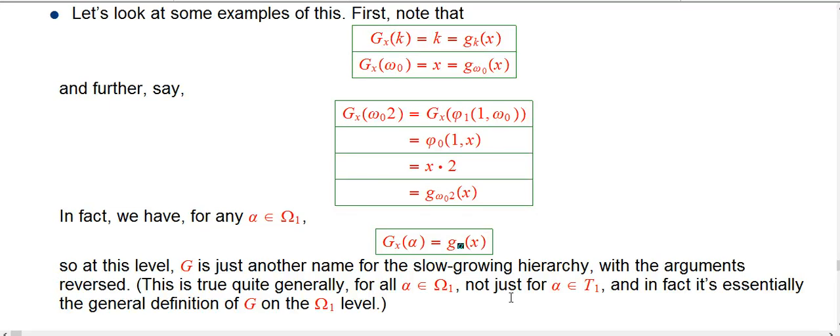So that's a little bit of a different feel from G alpha. Here, the alpha was the control parameter, and our main goal was to take this number, x, and create a bigger number. Here, we're thinking of the x as the helper argument, the kind of parameter, and the main purpose of Gx is demoting alpha.